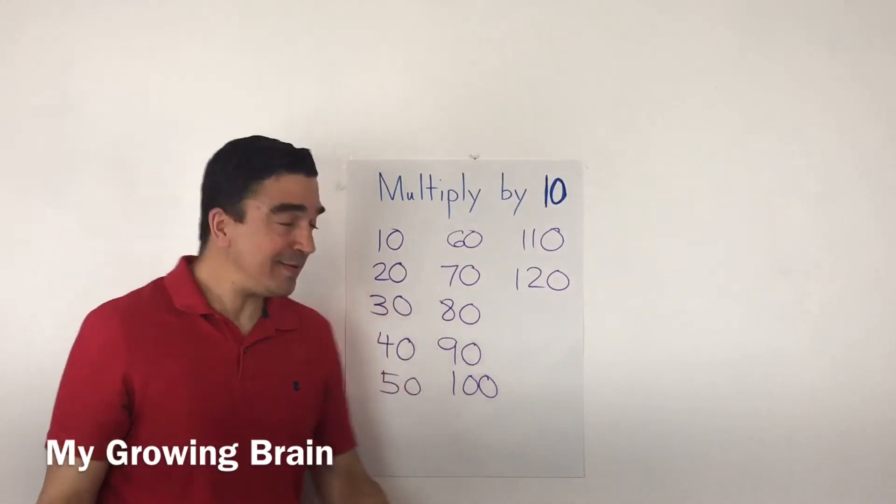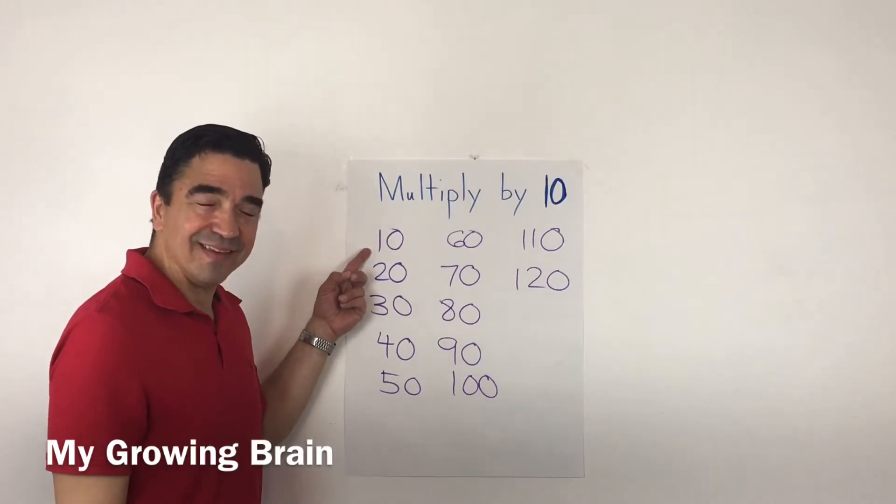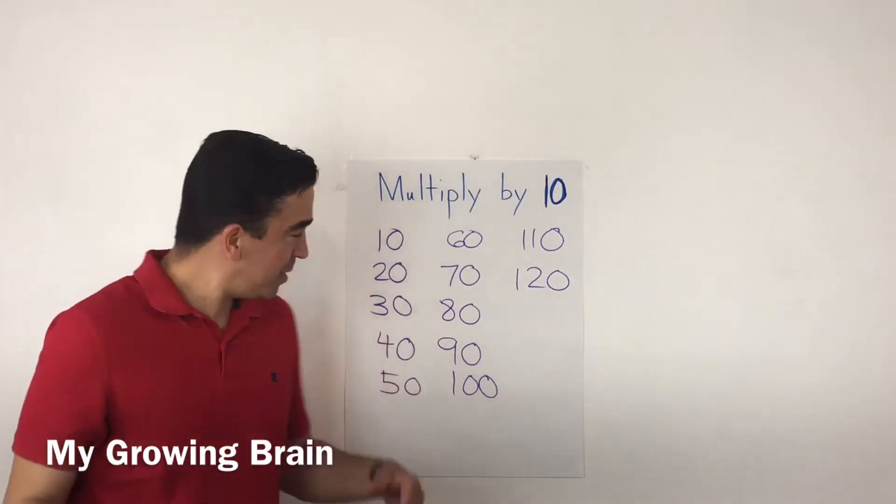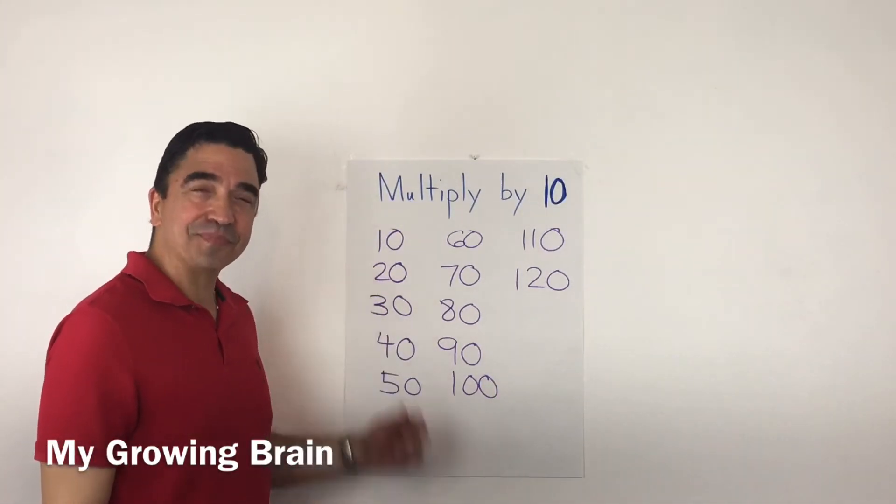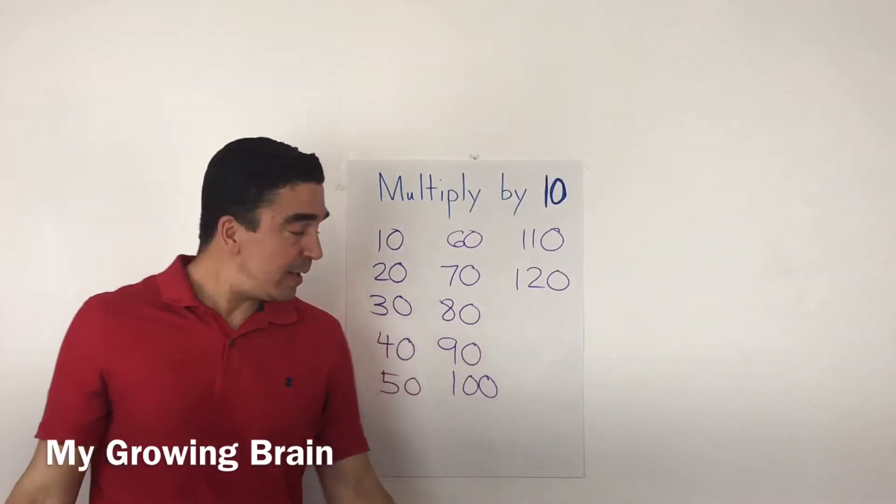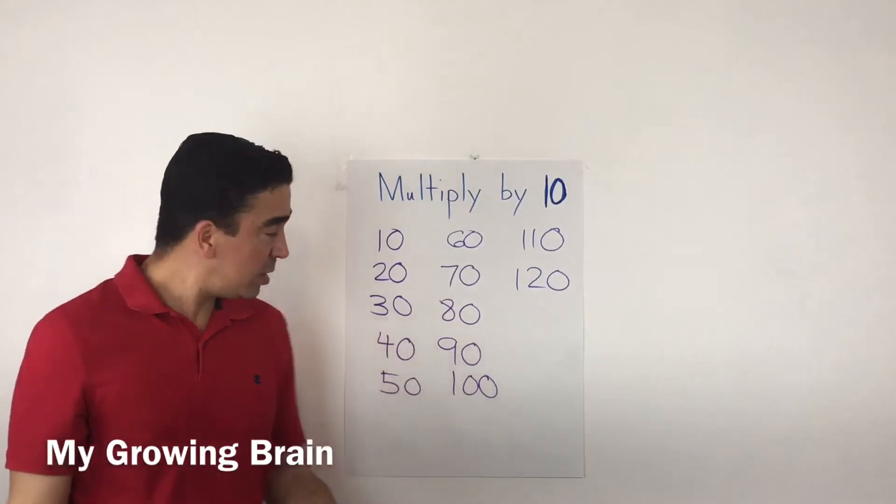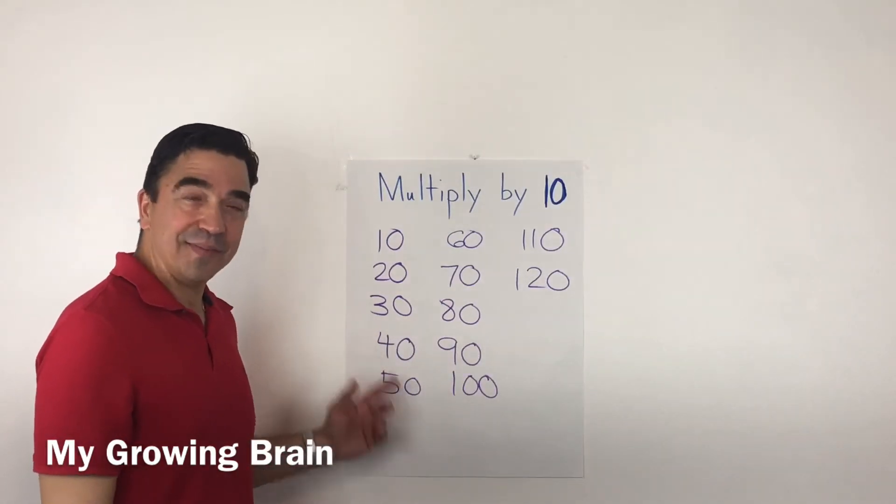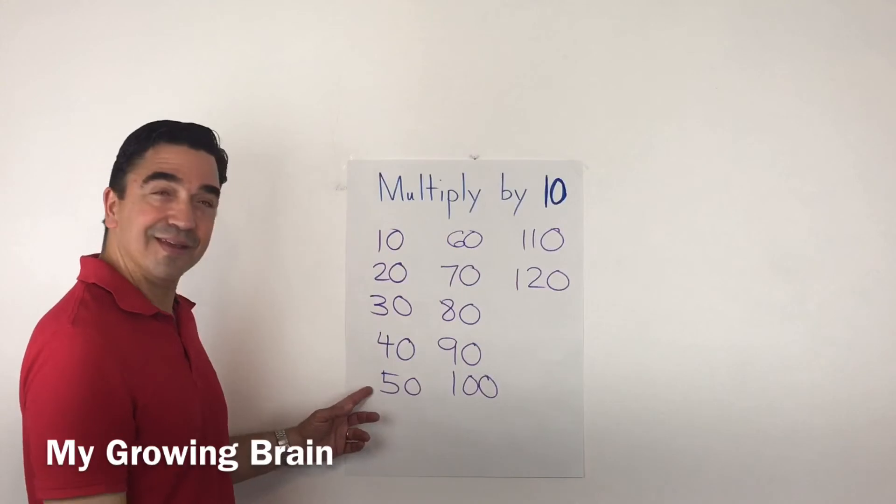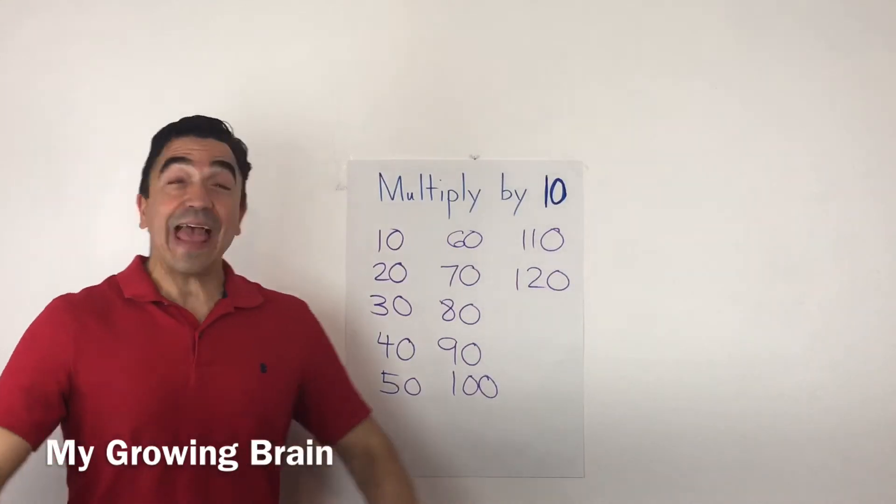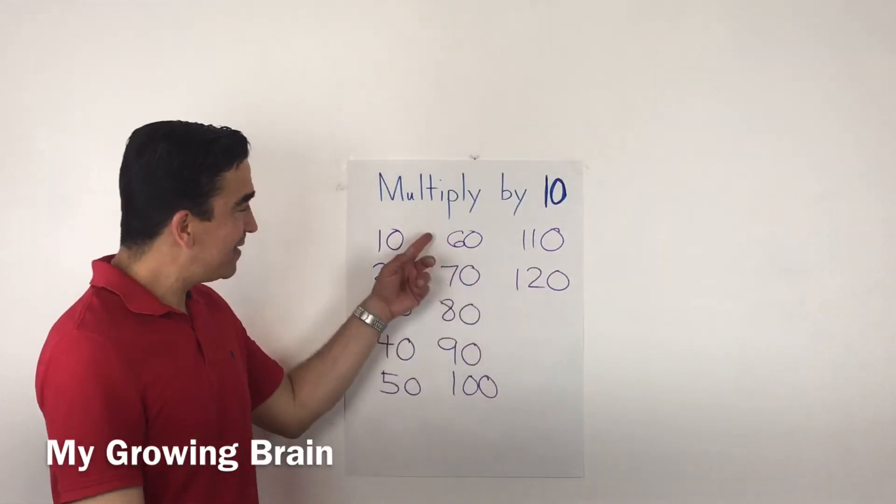10 times 1 is 10, 10 times 2 is 20, 10 times 3 is 30, 10 times 4 is 40.